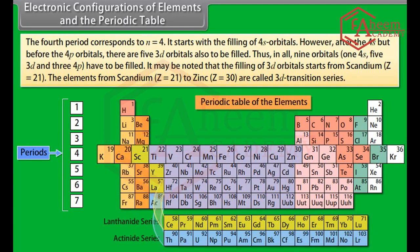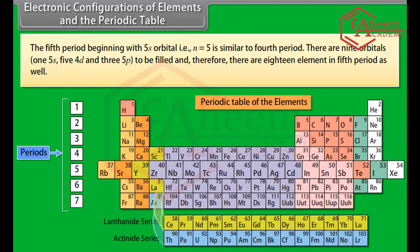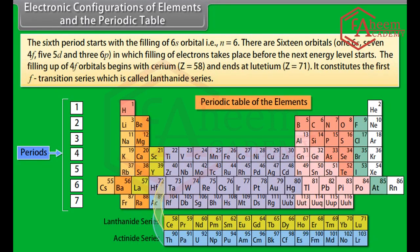However, after 4s but before 4p orbitals, there are five 3d orbitals also to be filled. Thus, in all, nine orbitals — 1 (4s), 5 (3d) and 3 (4p) — have to be filled. The filling of 3d orbitals starts from scandium (atomic number 21). The elements from scandium (Z=21) to zinc (Z=30) are called the 3d transition series. The fifth period (n=5) is similar to the fourth period, with nine orbitals — 1 (5s), 5 (4d) and 3 (5p) — giving 18 elements. The sixth period starts with filling of the 6s orbital (n=6), with 16 orbitals — 1 (6s), 7 (4f), 5 (5d) and 3 (6p) — in which filling of electrons takes place.